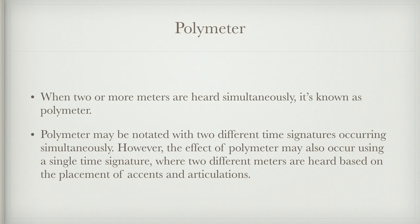The next concept is polymeter — when two or more meters are heard simultaneously. You can notate polymeter with different time signatures occurring at the same time, such as 2/4 and 3/4 simultaneously. This displaces the rhythm in the music. The effect of polymeter may also occur within a single time signature, which makes it harder to identify — the composer notates the music so that it sounds like it's in 3/4 against 2/4.